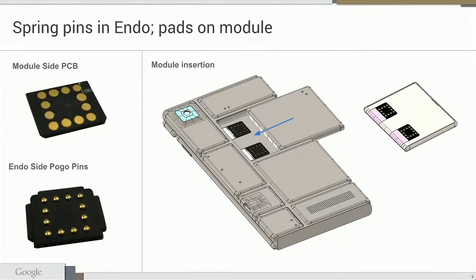In Spiral 2 we're using spring pins. You can see a picture of the customized spring connector that provides a variety of electrical connections to the module. On the top there's a module-side PCB called the interface block — a small PCB in the module that serves as the connector on the module side. The module has a smooth pebble industrial design with no protrusions or anything to snag when it's in your pocket.